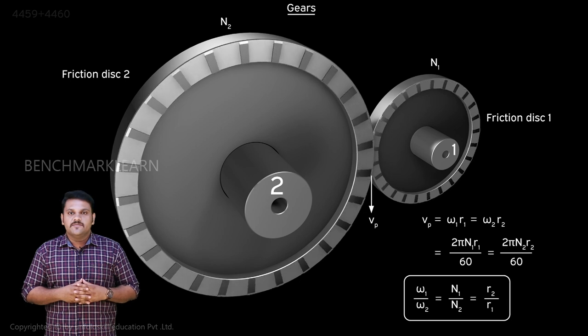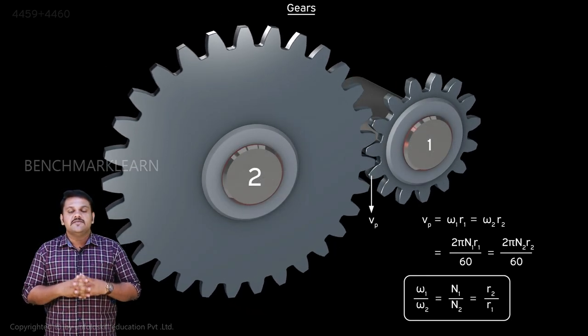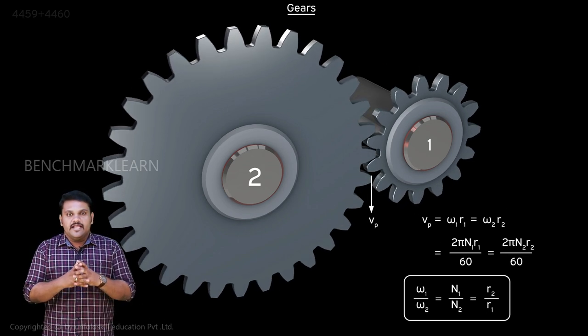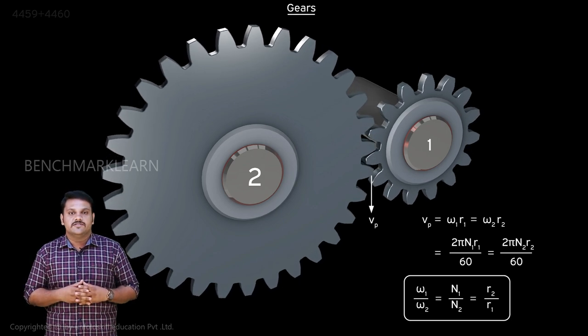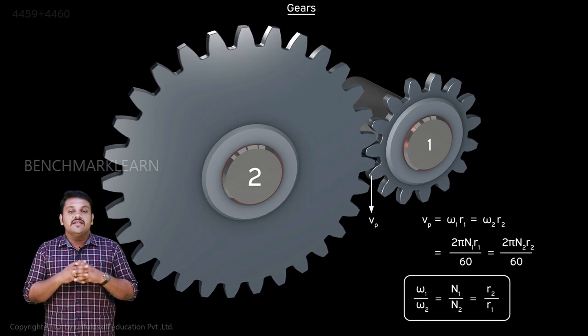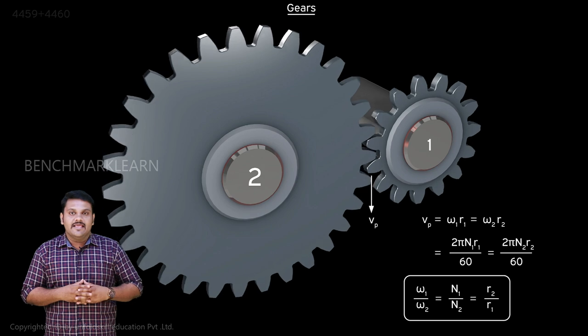In order to eliminate the possible slip, we replace the discs with toothed wheels in such a manner that the speed of motion does not change. The teeth of both wheels mesh together to transmit motion and force. Thus, it is converted into a positive drive where there is no slip. These toothed wheels are called gears.